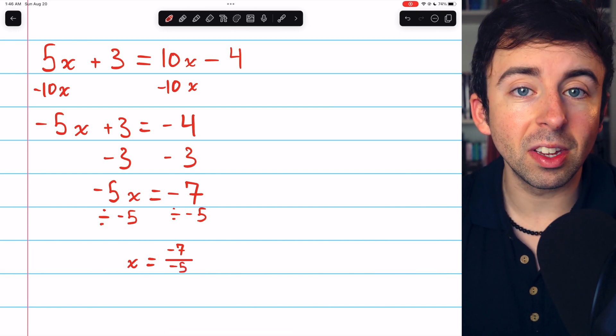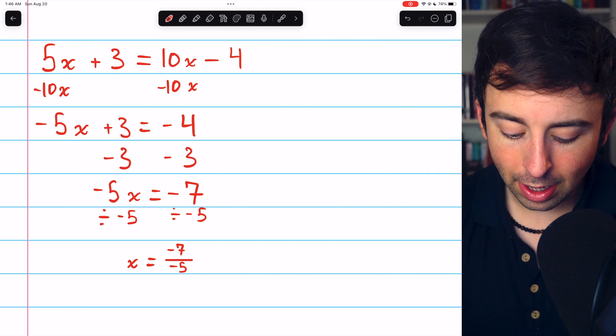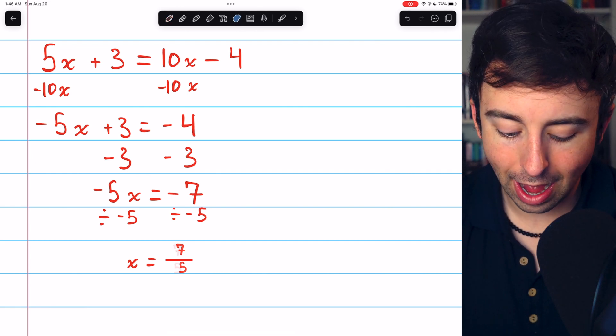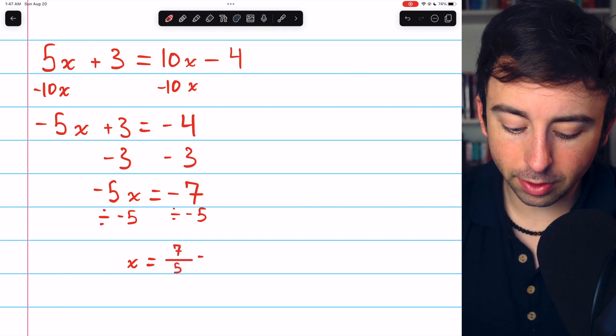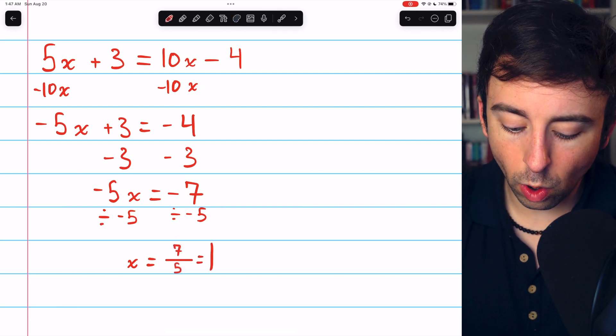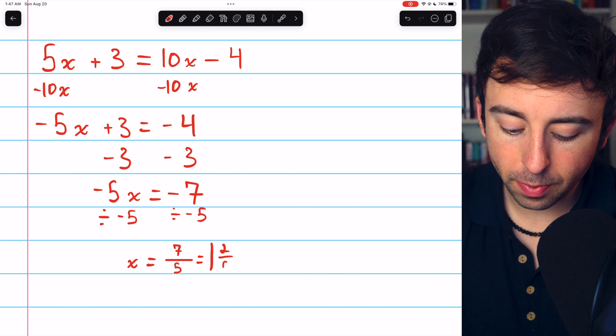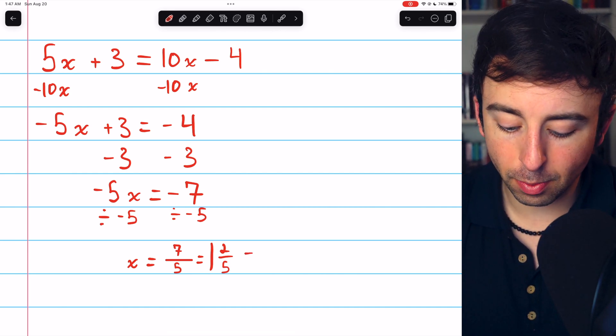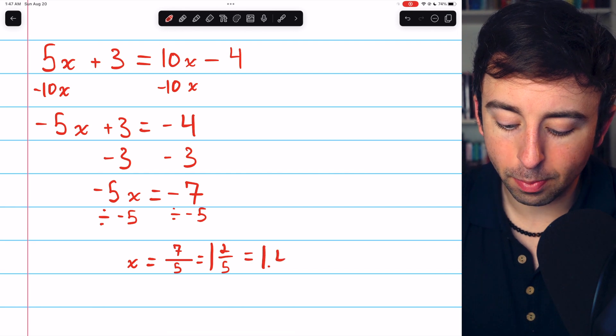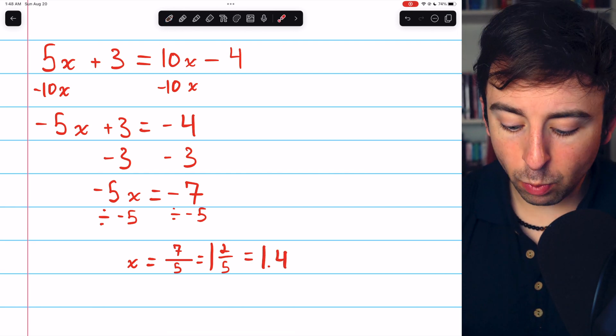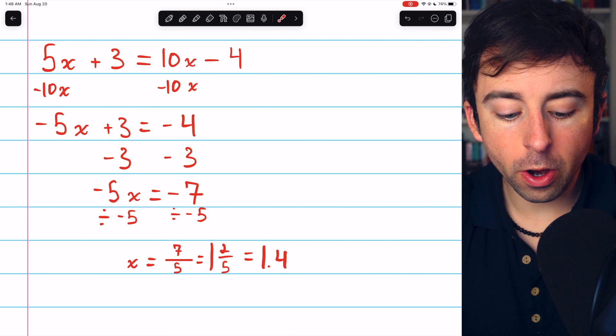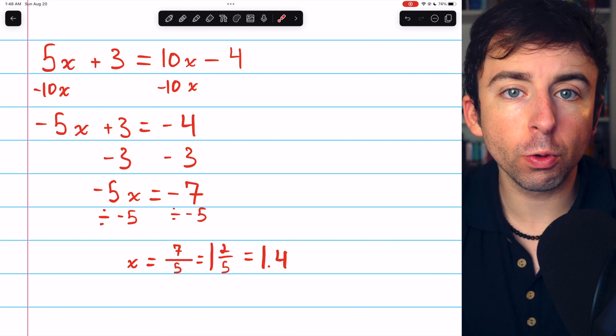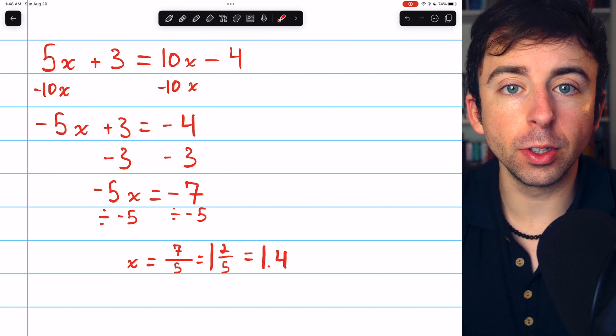Although, since there's a negative in the top and bottom, those can cancel out and just leave us with 7 over 5. If you prefer mixed numbers, 5 goes into 7 once with 2 left over. So as a mixed number, it would be 1 and 2 fifths, or if you're more of a decimal person, this is 1.4. Now you might want to try plugging 1.4 back in for x to see that it makes the equation true in order to verify your solution.